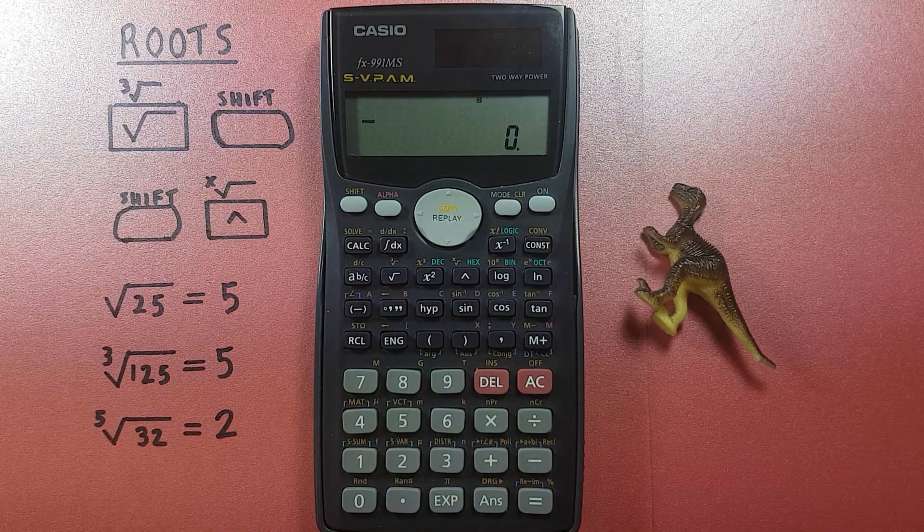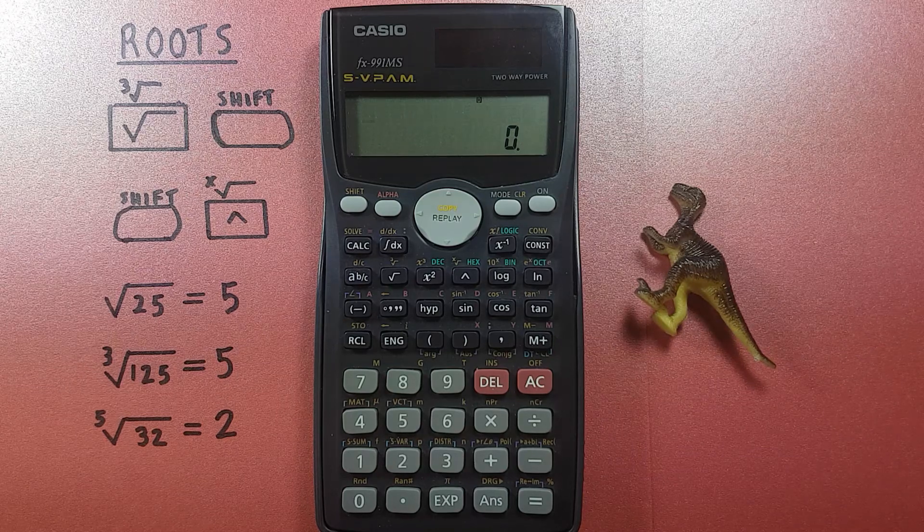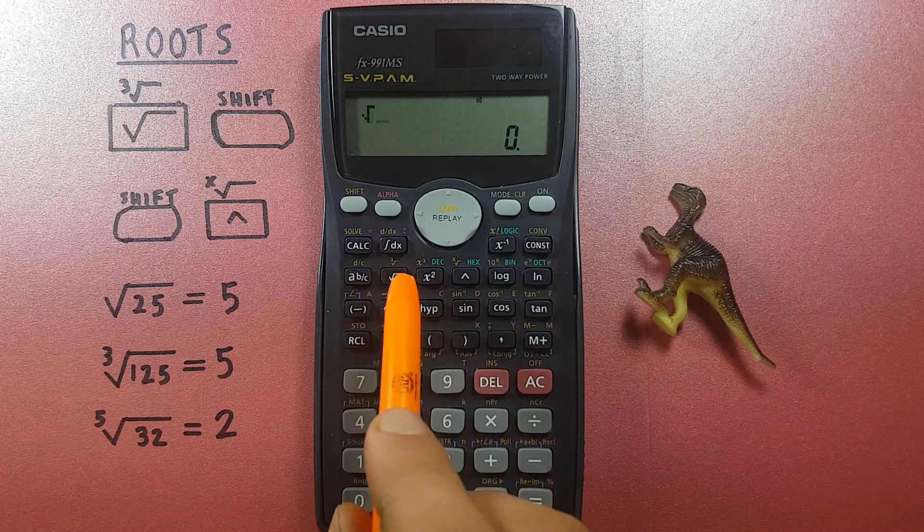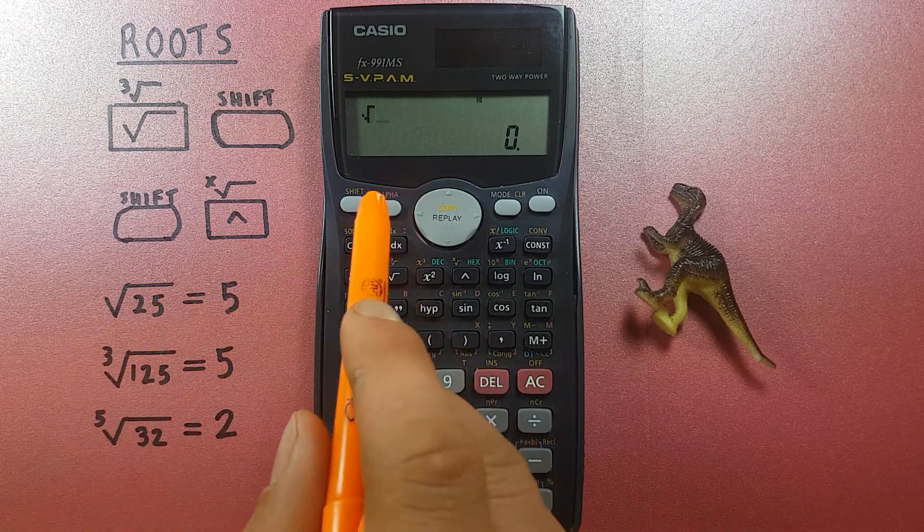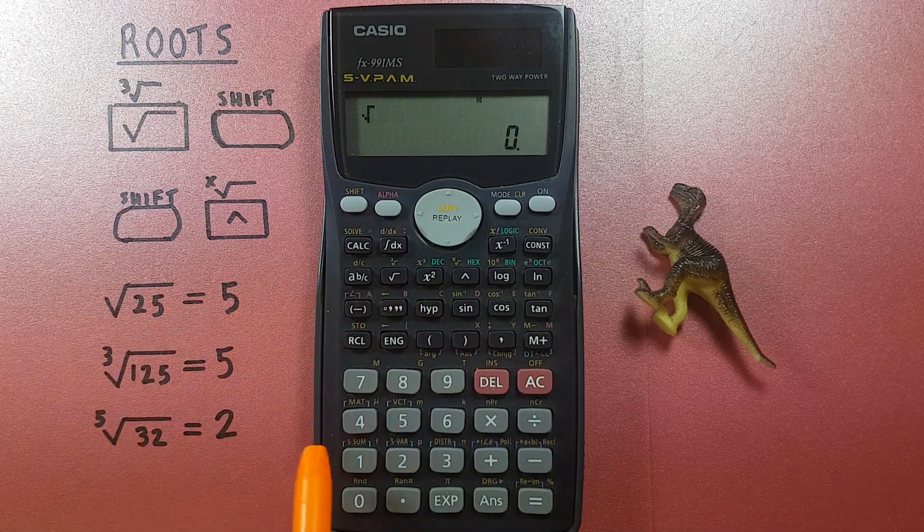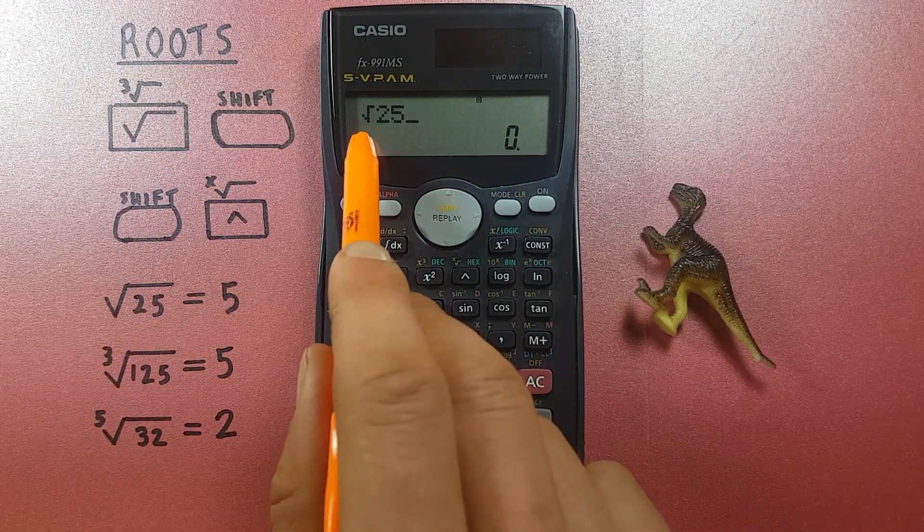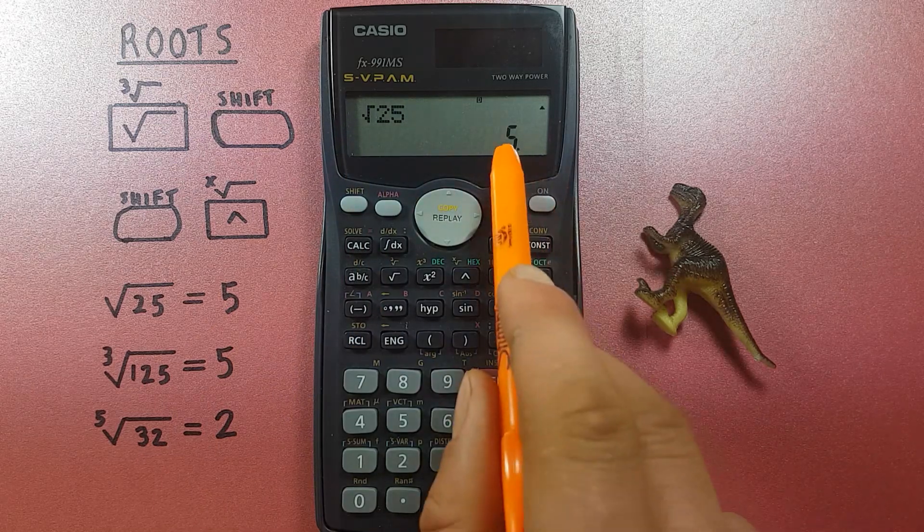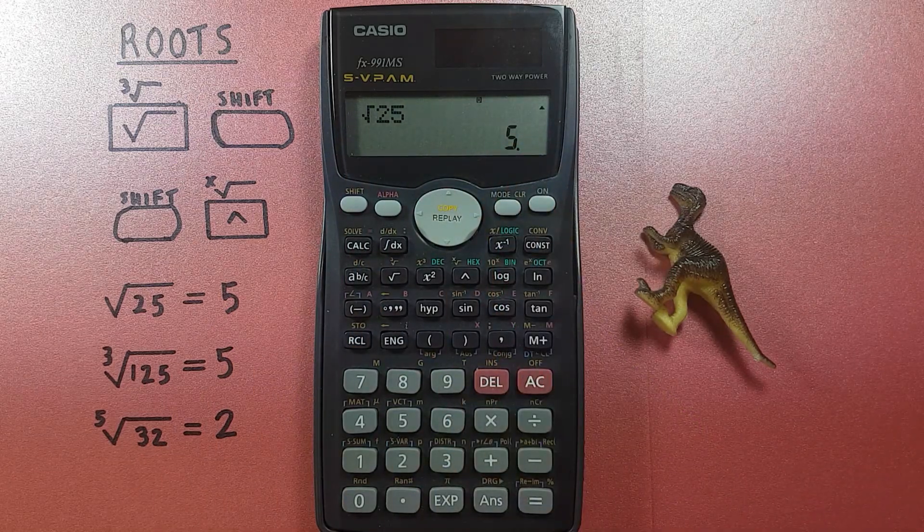To get started, if we just wanted to square root a number we would start by pressing the square root key and then entering the number. So we'll use 25. Square root of 25 equals 5. Easy enough.